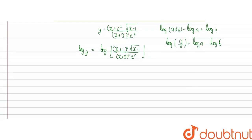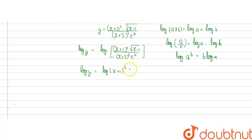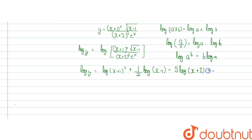So we will get log y equal to 2 log x plus 1, plus half into log x minus 1. Then using log a by b equals log a minus log b, we get minus 3 log x plus 3, plus log e to the power x.